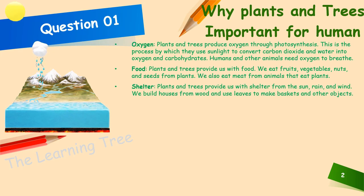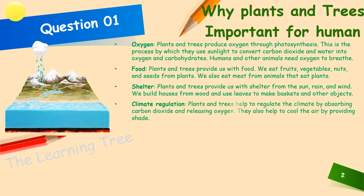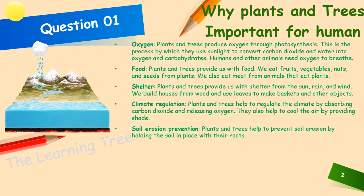Shelter: plants and trees provide us with shelter from the sun, rain and wind. We build houses from wood and use leaves to make baskets and other objects. Climate regulation: plants and trees help regulate the climate by absorbing carbon dioxide and releasing oxygen. They also help cool the air by providing shade. Soil erosion prevention: plants and trees help prevent soil erosion by holding the soil in place with their roots.